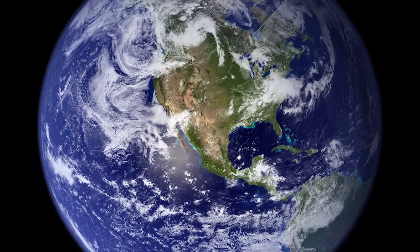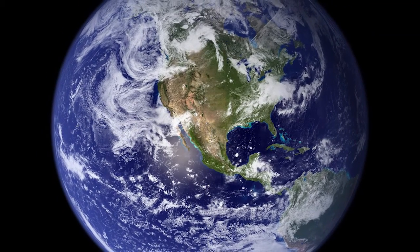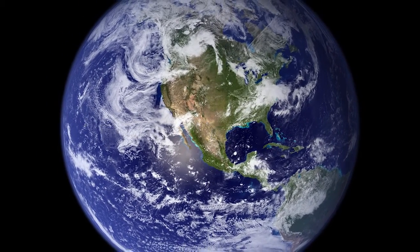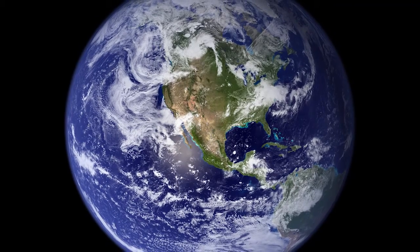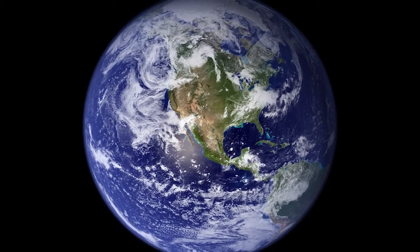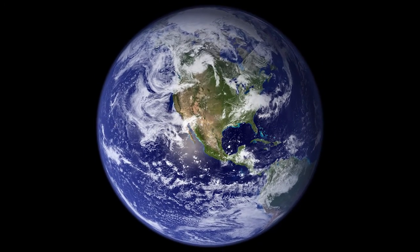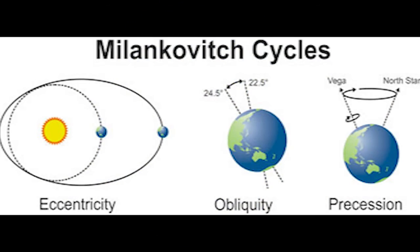The Milankovitch cycles are a set of variations in characteristics of the earth's orbit around the sun. The combined effects of the changing distance to the sun, the precession of the earth's axis, and the changing tilt of the earth's axis redistribute the sunlight received by earth. There are 3 general factors in these cycles: eccentricity, which is the elliptical changes in earth's orbit around the sun.